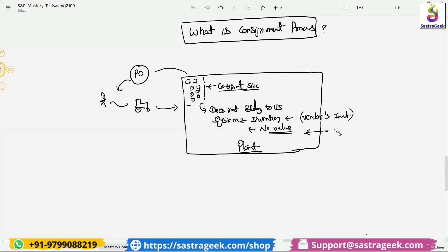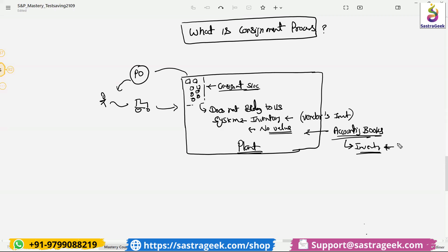If we look at the accounting side, in our accounting books it will not show the value in the inventory. It is not part of our financial books. So it is with us physically — we can see the inventory — but it is not in our financial books. It does not belong to us; it still belongs to the vendor.